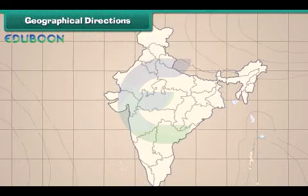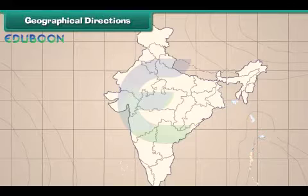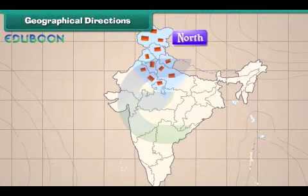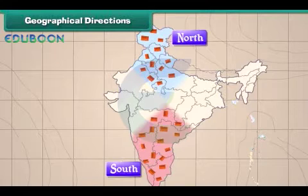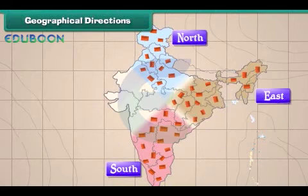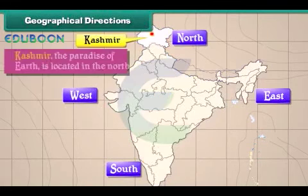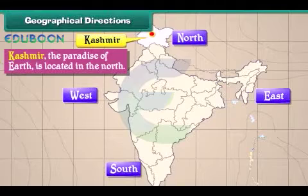People live at different places in India. Some places are in the north while some others are in the south. Some places are located on the east and some others are on the west. Kashmir, the paradise of earth, is located in the north.